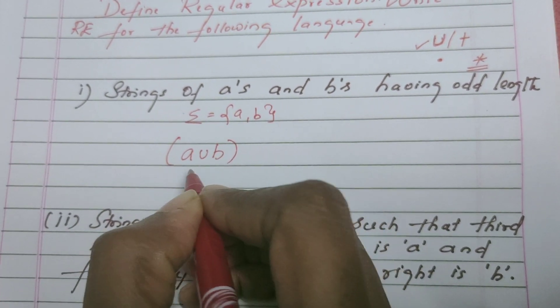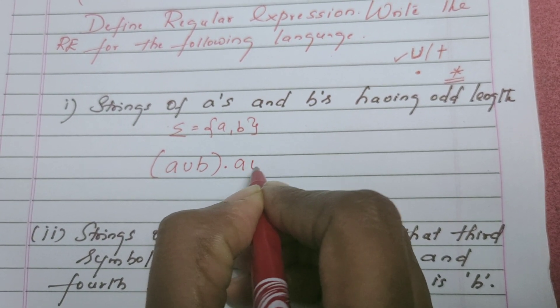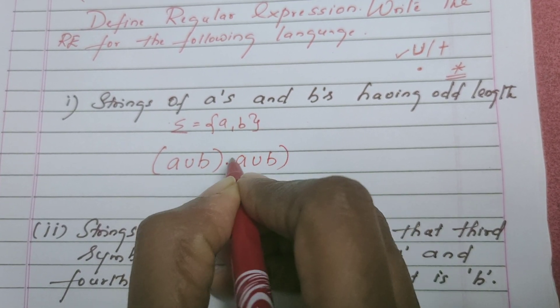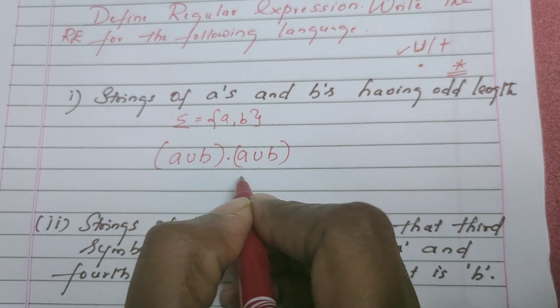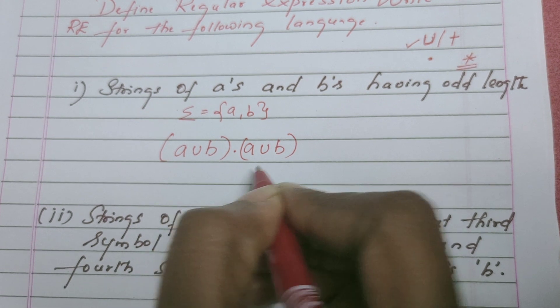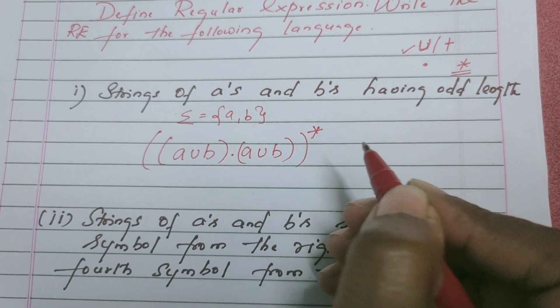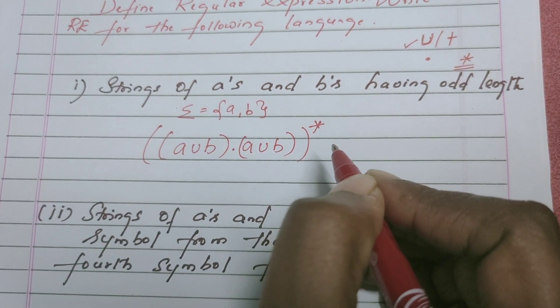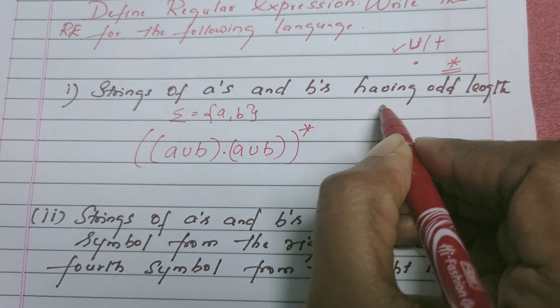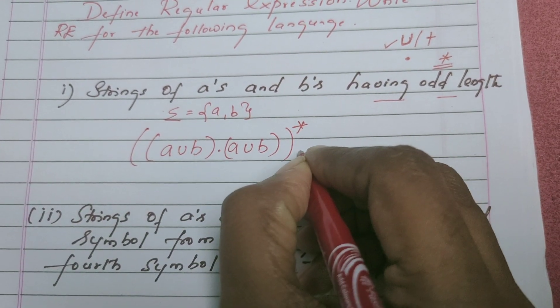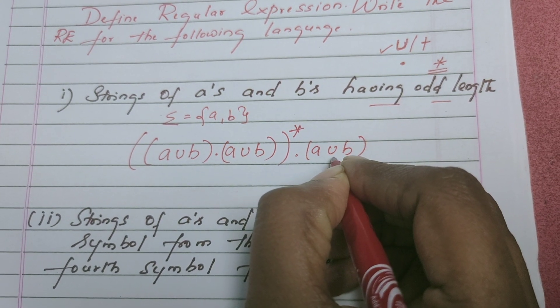strings of A's and B's of length 2. If I put whole star, it will produce a string of A's and B's of length 2 and multiples of 2. But we want strings of A's and B's having odd length. So concatenate this entire regular expression by A or B. Instead of union we